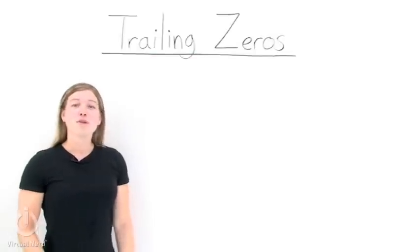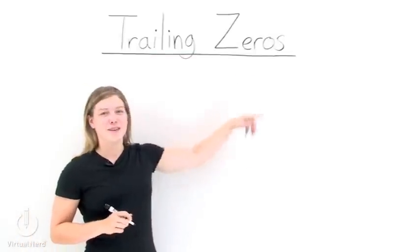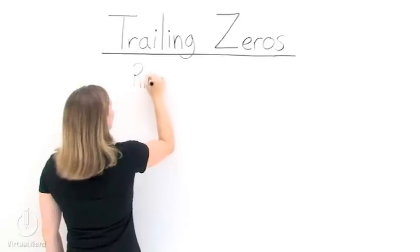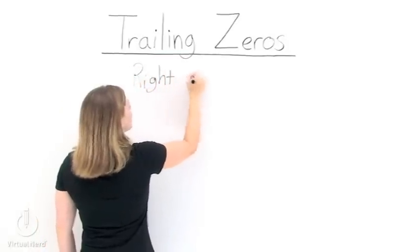What are trailing zeros? Well, trailing zeros are obviously zeros. But what makes them trailing? In order for a zero to be a trailing zero, it needs to have two qualities.